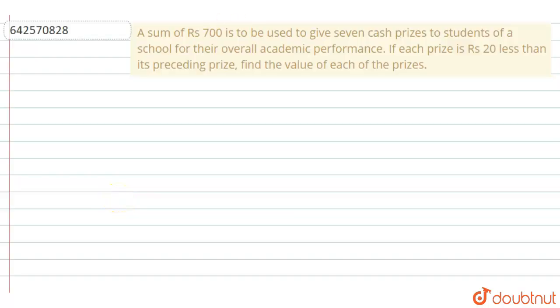The question says that a sum of Rs. 700 is to be used to give 7 cash prizes to students of a school for their overall academic performance. If each price is Rs. 20 less than the preceding price, find the value of each of the prices.